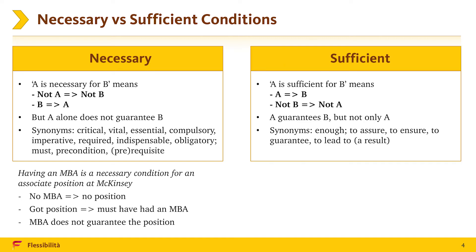Now, sufficient conditions. Condition A is sufficient for condition B means that presence of A will guarantee presence of B. Equivalently, it means that absence of B is possible only if A is absent. It does not mean that absence of A results in absence of B — maybe some other condition is enough, not just condition A. Indicators of sufficient conditions are words like enough, to assure, to ensure, to guarantee, to lead to.